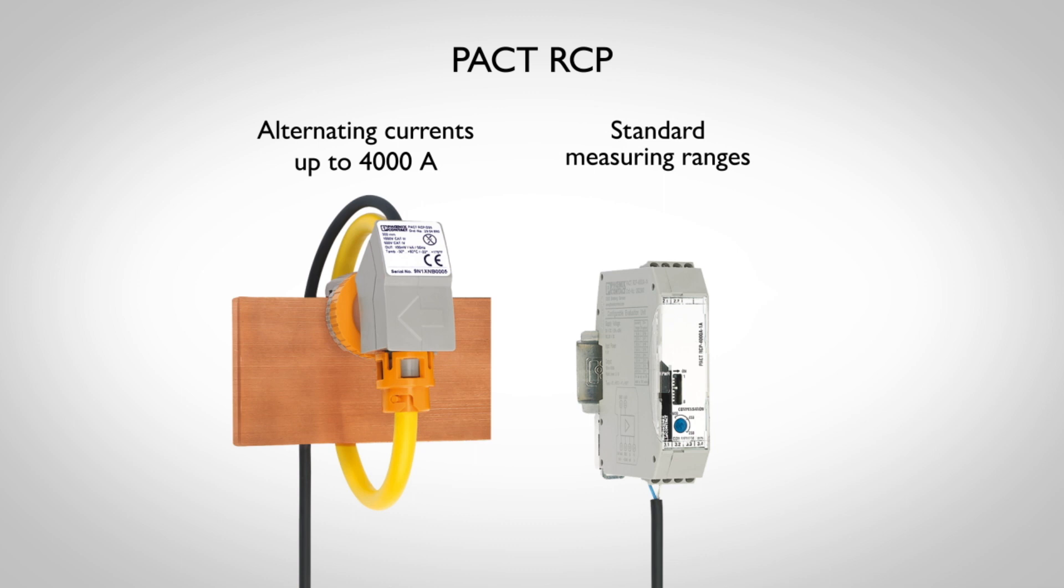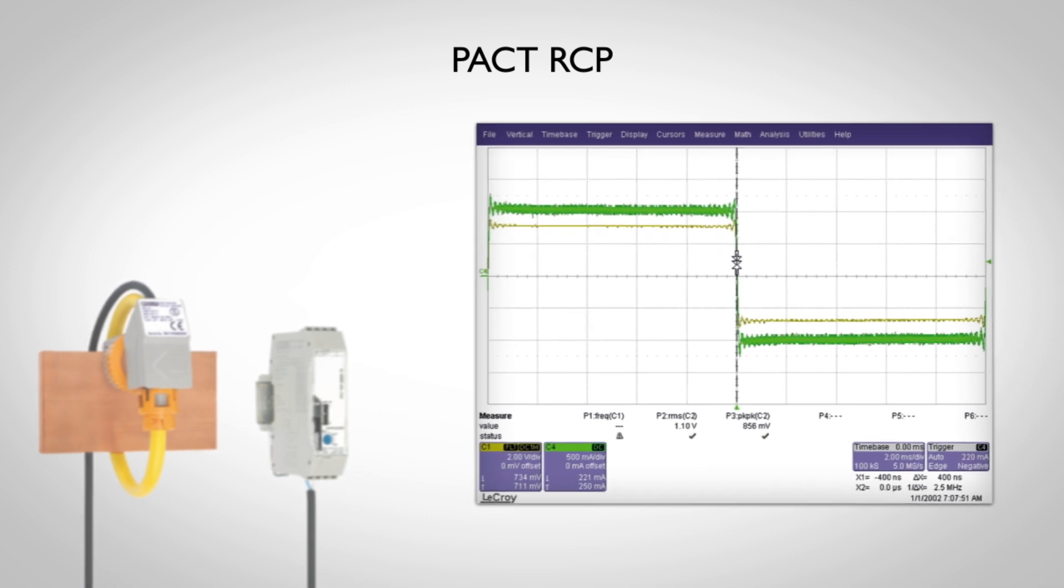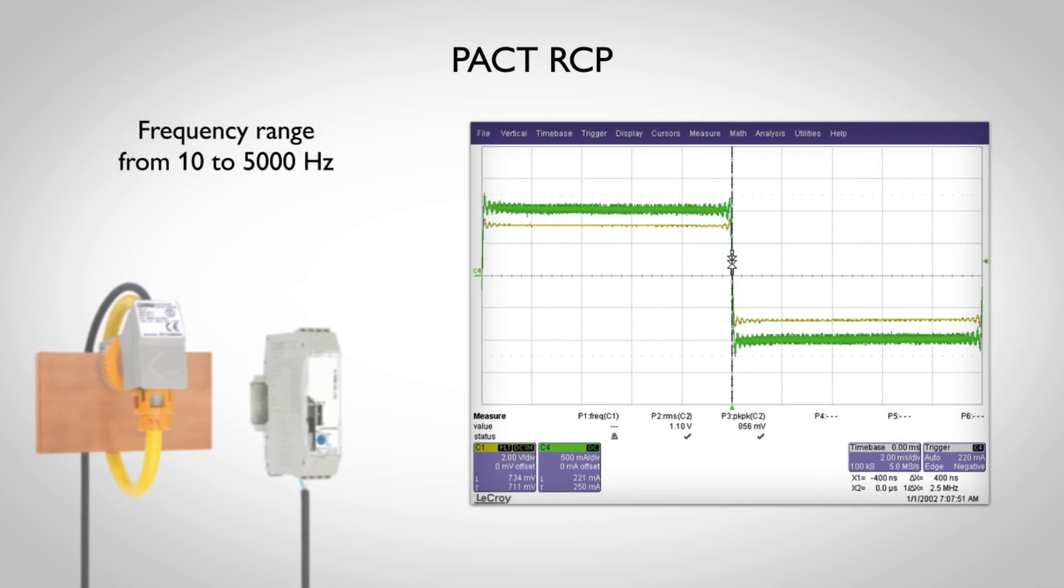The absence of an iron core results in a wide frequency range of 10 to 5000 Hz, thereby enabling transients and harmonics to be detected with phase accuracy.